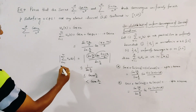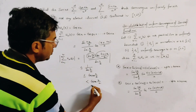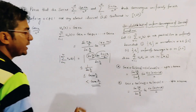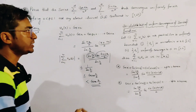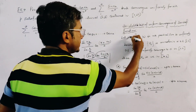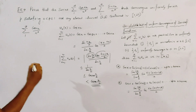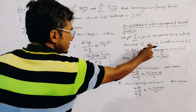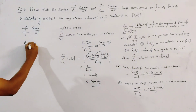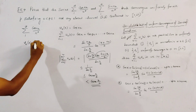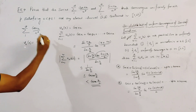It is clear that this sum is uniformly bounded and bounded by cosec(x/2), so the first condition is satisfied. Now we take the second sequence of functions v_n(x). What is v_n(x)? v_n(x) is 1/n^p.